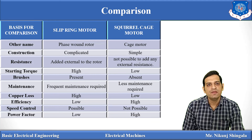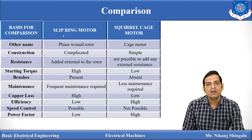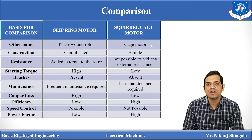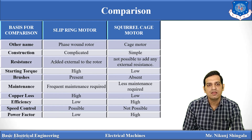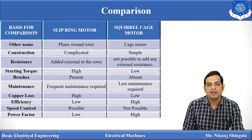Now let us look at the comparison between slip ring motor and squirrel cage motor. Three-phase induction motors are classified based on the type of rotor used. The slip ring motor uses slip ring rotor (phase-wound type); the squirrel cage motor uses cage type rotor. Construction of the slip ring motor is complicated due to windings; the squirrel cage motor has simple construction using copper bars. External resistance can be added in the slip ring motor but not in the squirrel cage motor. Starting torque is very high and variable for slip ring, and low for squirrel cage. Brushes are present in slip ring motor and absent in squirrel cage. Frequent maintenance is required for slip ring motor; less maintenance is needed for squirrel cage.